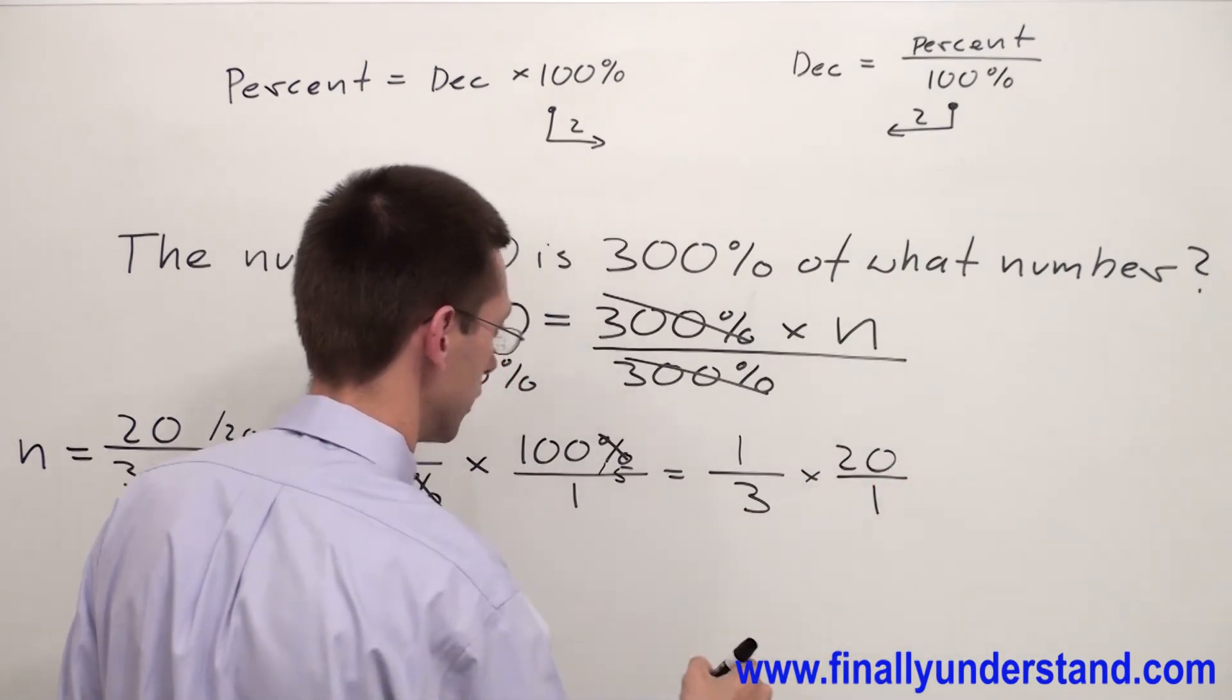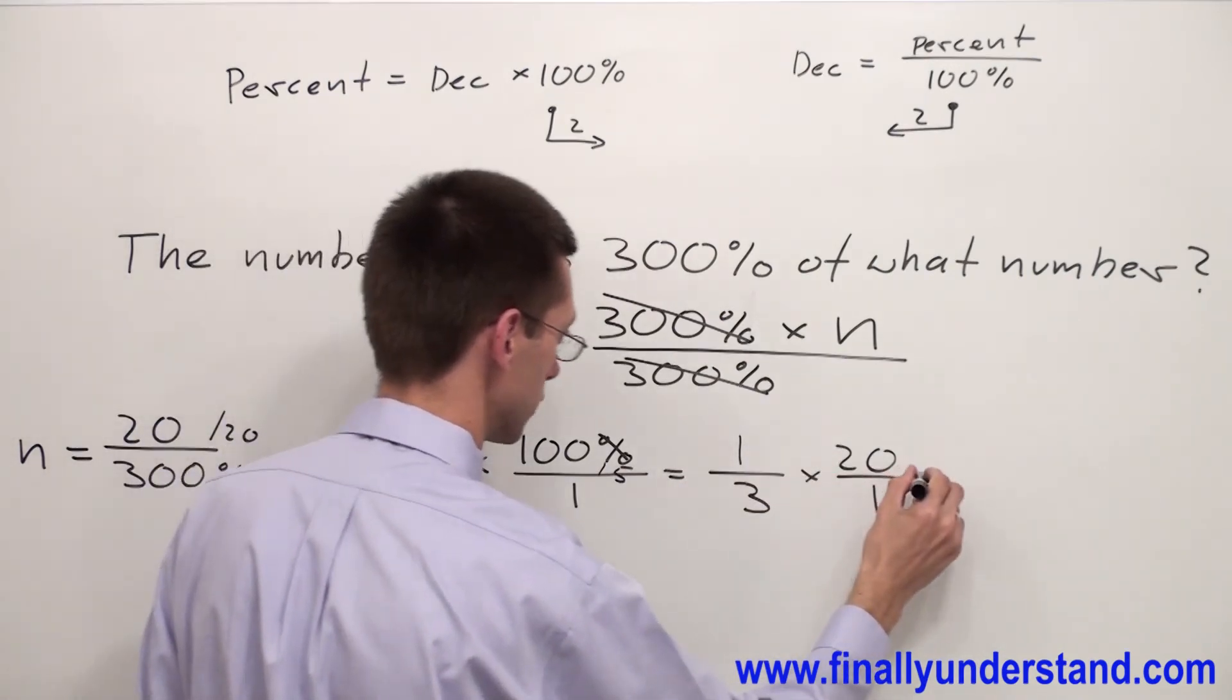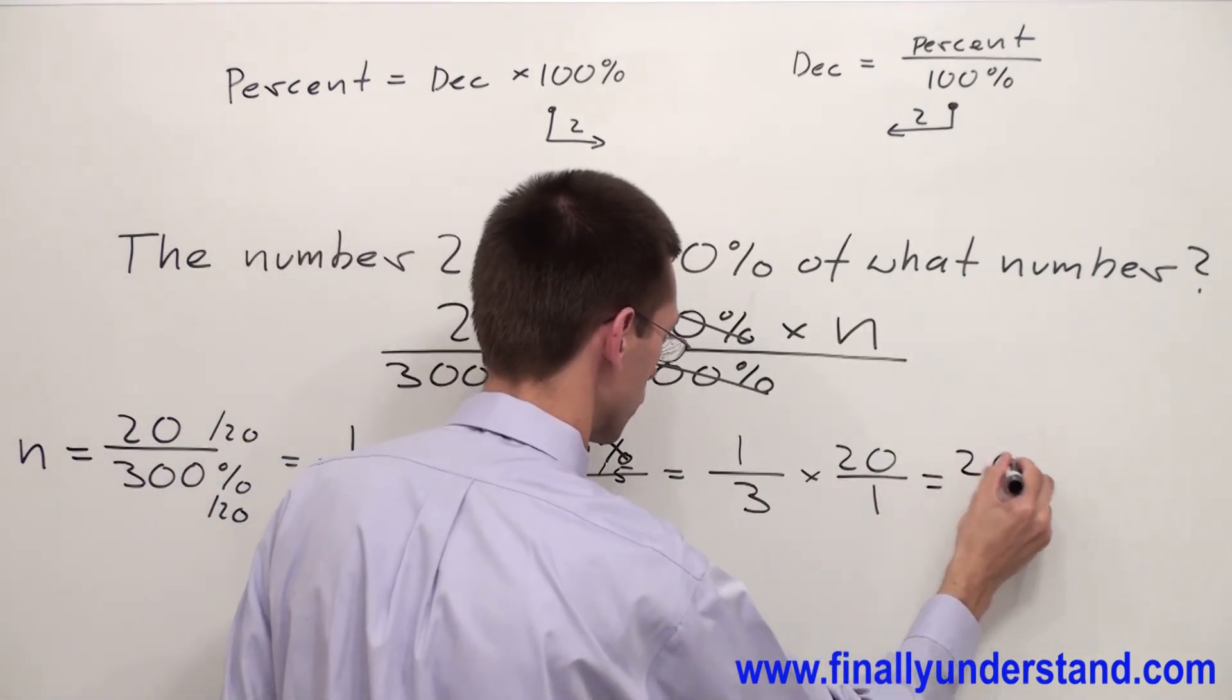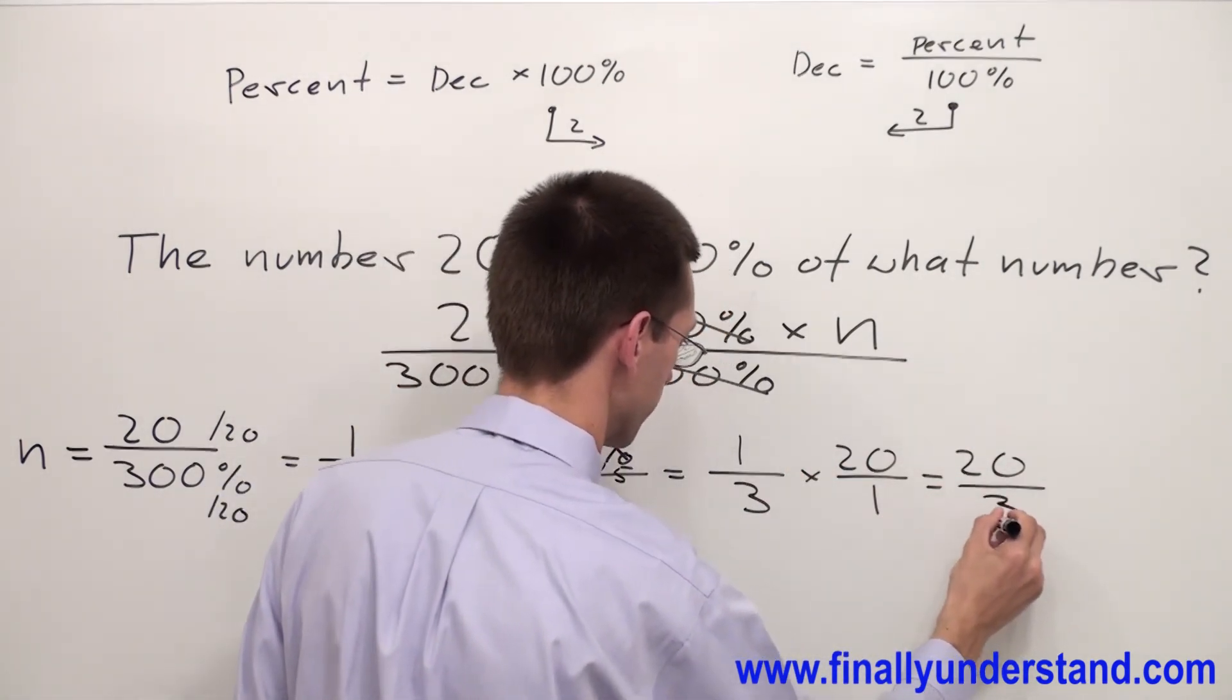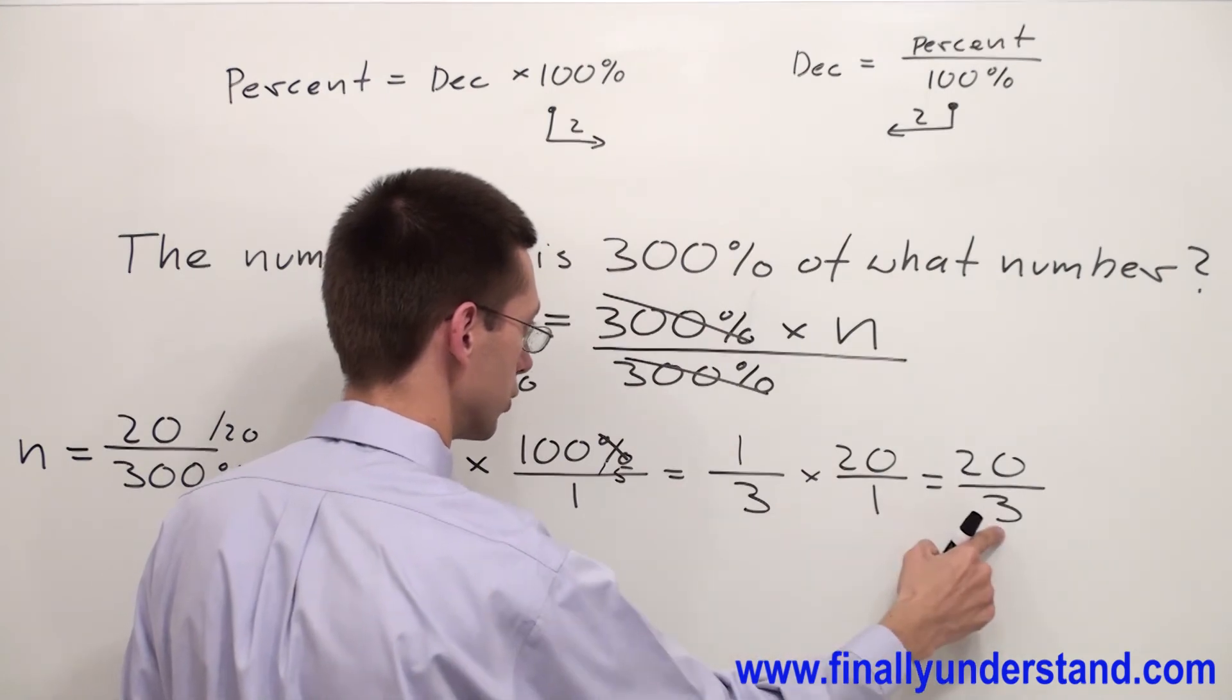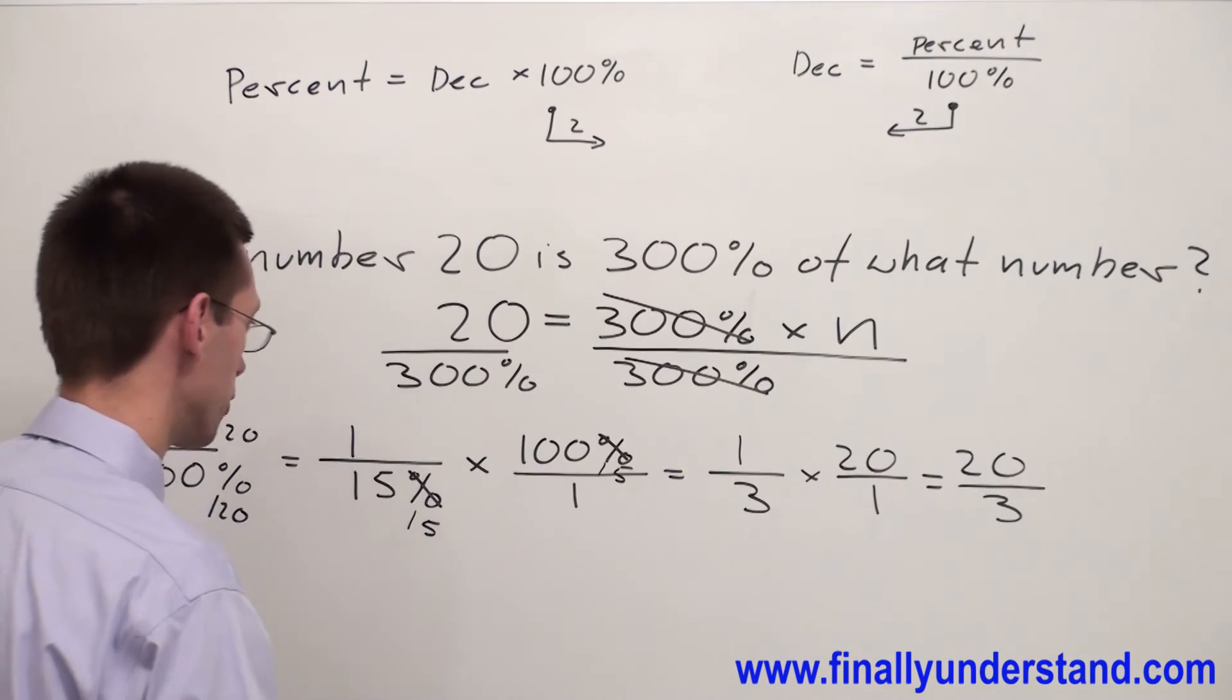I can multiply now - numerator with numerator: 1 times 20 is 20, and denominator with denominator: 1 times 3 is 3. So I have 20/3. This is an improper fraction, so I'm going to convert it to a mixed number.